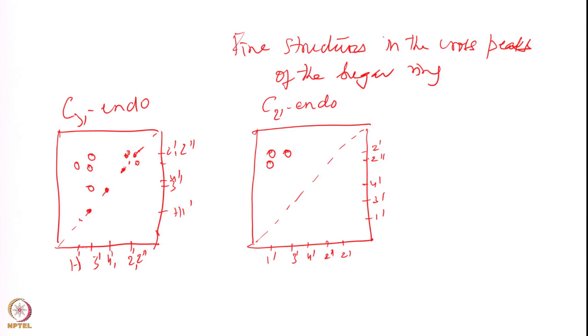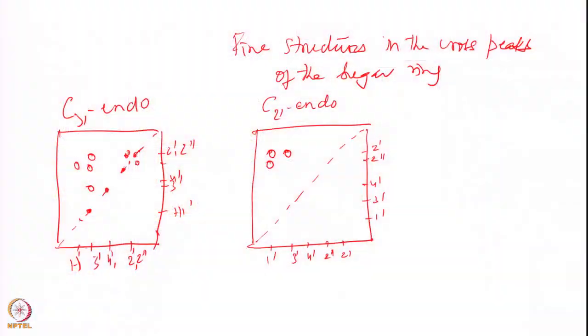By looking at the pattern of cross peaks, you can determine whether the geometry is in the North or South domain in the case of pure geometries. If there are equilibrium mixtures of both, you may find peaks from both geometries present. The coupling constants can be measured from the fine structures of the cross peaks, which contain this information.